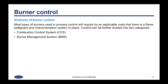Most types of burners used in process control will require by applicable code that there is a flame safeguard and instrumentation system in place. Control can further be divided into two categories: a combustion control system or CCS, and a burner management system or BMS.